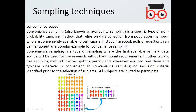Convenience sampling, also known as availability sampling, is a non-probability sampling method that relies on data collection from population members who are conveniently available to participate in the study. As the name implies, you select based on whichever convenient number of people are available to you.